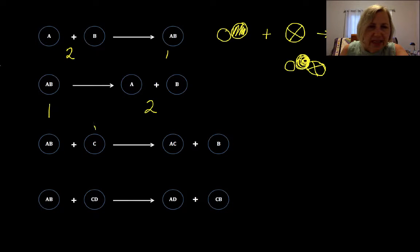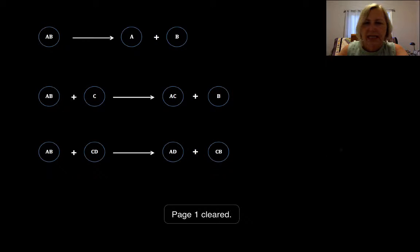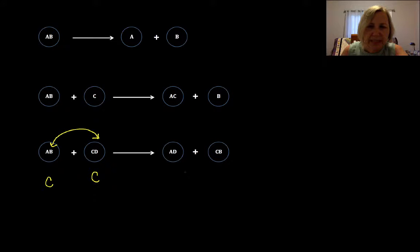You notice here that C is cutting in and taking B's place. So this is an element and a compound going to an element and a compound. So this would be your single replacement. And then in this last one, you have a compound AB plus a compound CD. And you'll notice that D and B are switching places. The anions in this place are switching places, so we get two new compounds. And that's the differentiation between single and double. Watch for elements for your single.